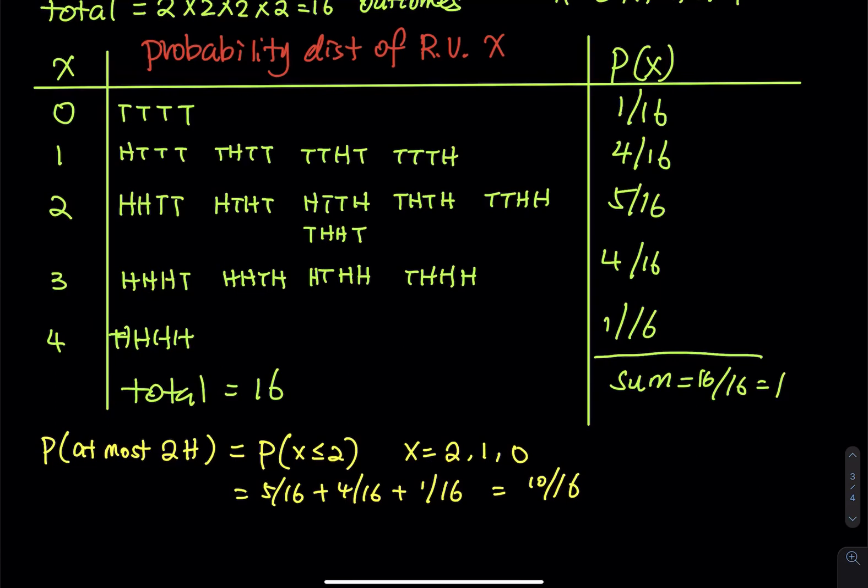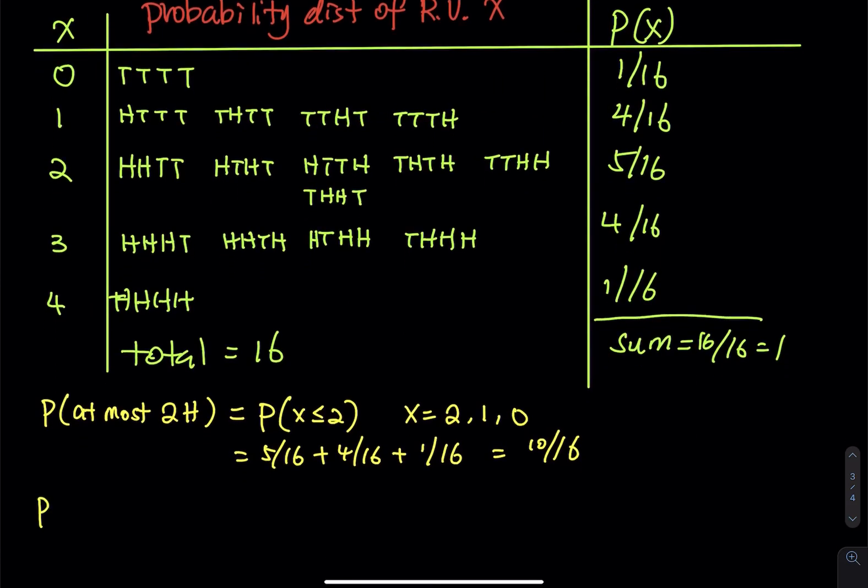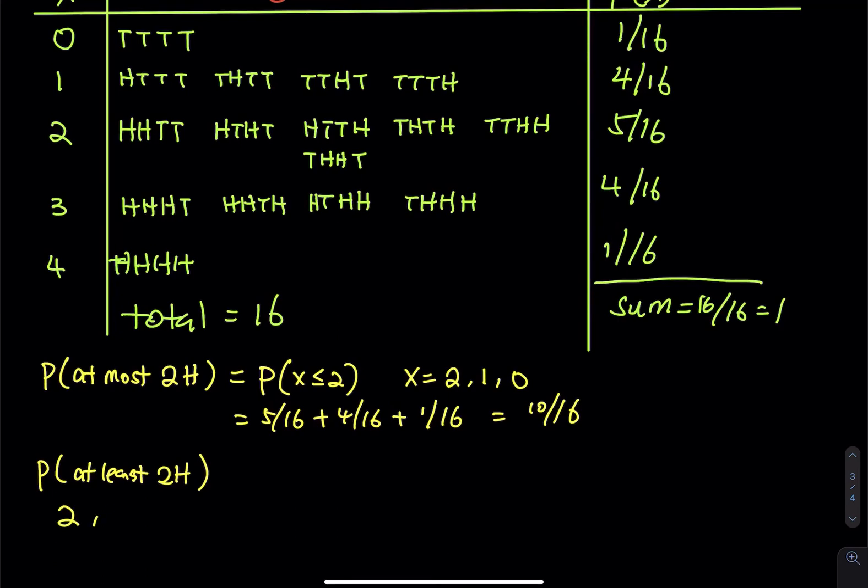What about at least two? The probability of at least two heads. You have four coins. Toss all four of them. What is the probability that you will get at least two heads? At least two means the minimum is two. It can be three. It can be four, but we cannot go beyond four. So that would be probability of two is five over 16. And then three is four over 16. And then the last one is one over 16. So that is equals to 10 over 16.